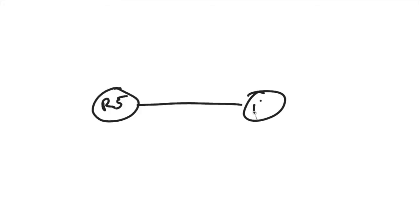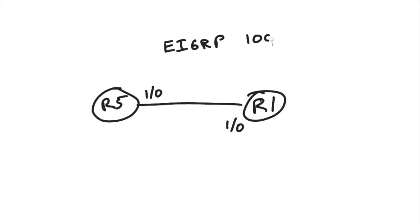It really is amazing how much you can do and experiment with just two routers. I've got R5, and R5 is connected to R1. They are connected via their FastEthernet 1/0 interfaces. We are going to drop into this topology using EIGRP with Autonomous System 100 — the ubiquitous AS everyone likes to use for EIGRP — and this is going to be a completely IPv6-only environment.